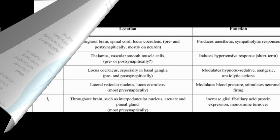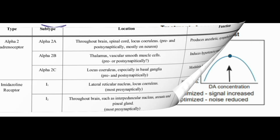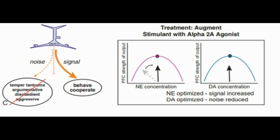There are different sub-receptors of the alpha-2 receptor, and guanfacine is highly selective for alpha-2a. The alpha-2a receptor is most prevalent in the prefrontal cortex and is believed to mediate the inattentive, hyperactive, and impulsive symptoms of ADHD. Alpha-2b is mostly in the thalamus and has more sedative effects, while alpha-2c is in the locus coeruleus and has more hypotensive and sedative actions.